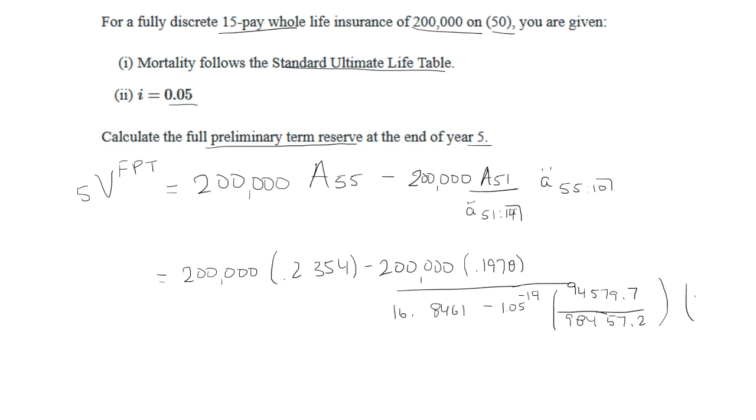Then we're going to multiply that by the annuity due at age 65. Let's write it better: 13.5498. And then we're going to multiply by this annuity due, which is just going to be this.